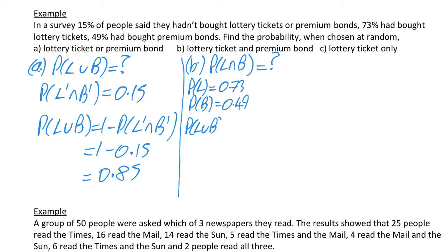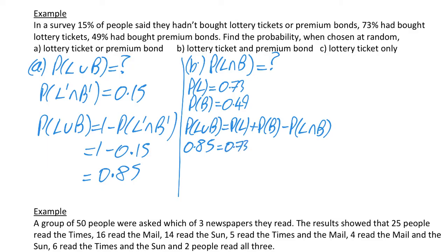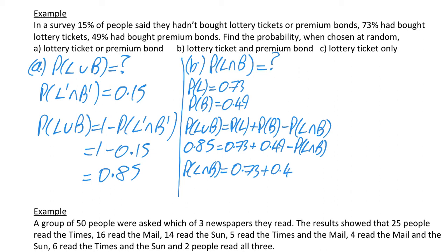The probability of L union B equals the probability of a lottery ticket plus the probability of a premium bond minus the probability of a lottery ticket and a premium bond. Filling in what we know: 0.85 equals 0.73 plus 0.49 minus the intersection. Bringing the intersection across to the other side and making it positive: 0.73 plus 0.49 minus 0.85, and that gives you 0.37.